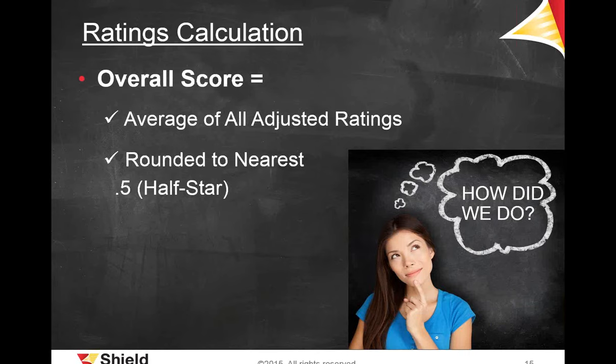Your agency will then receive a star for that measure based on the final calculation. The overall score your agency receives is the simplest calculation — it's basically just an average of all your individual measures combined, rounded to the nearest 0.5 or half star. This is probably going to be one of the most important scores and the one most frequently used when comparing agency to agency. It's also likely the score that helps a consumer decide whether to select one agency over another.